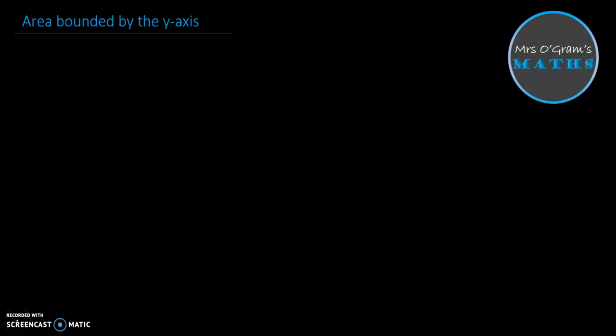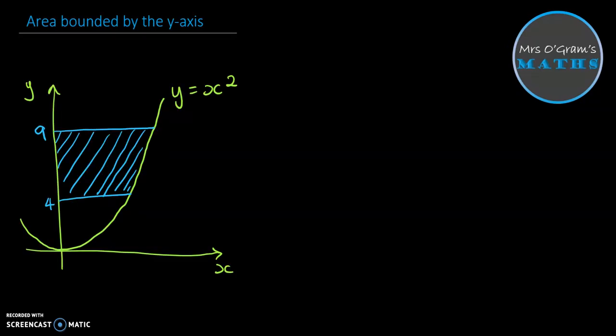Most of the time when you're integrating, you're doing it with respect to x, and so you can work out the area under a curve that's bounded by the x-axis. Occasionally you might need to switch things around and do an area that's bounded by the y-axis instead. On this particular example we've got the curve y equals x squared, and we're working out this shaded region where it's being measured against the y-axis rather than the x-axis.